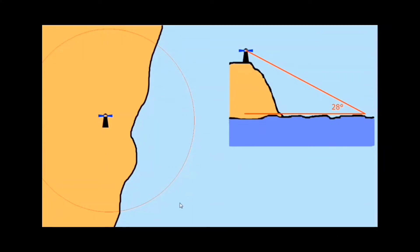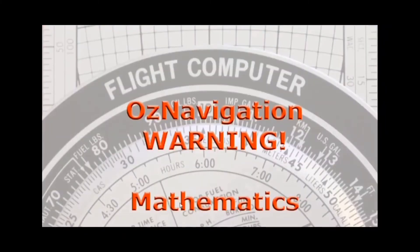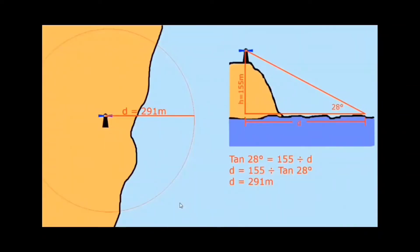I've talked about position lines in a previous video, and I'll link that below if you want to have a look. I should warn you that this section contains mathematics — you have been warned. To determine your position, in this case we're going to use metres for both height and distance. You can do it mathematically quite simply.